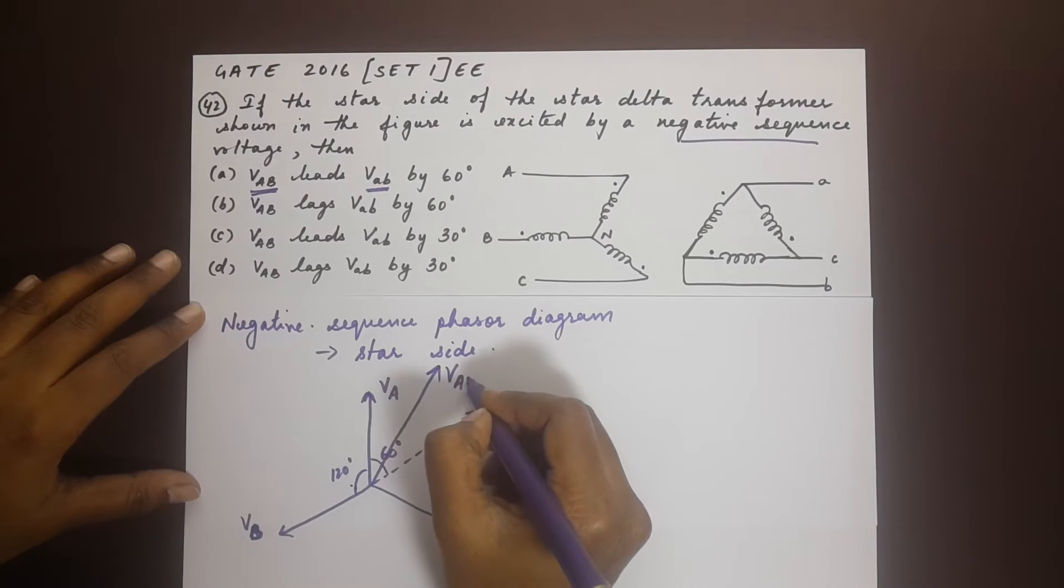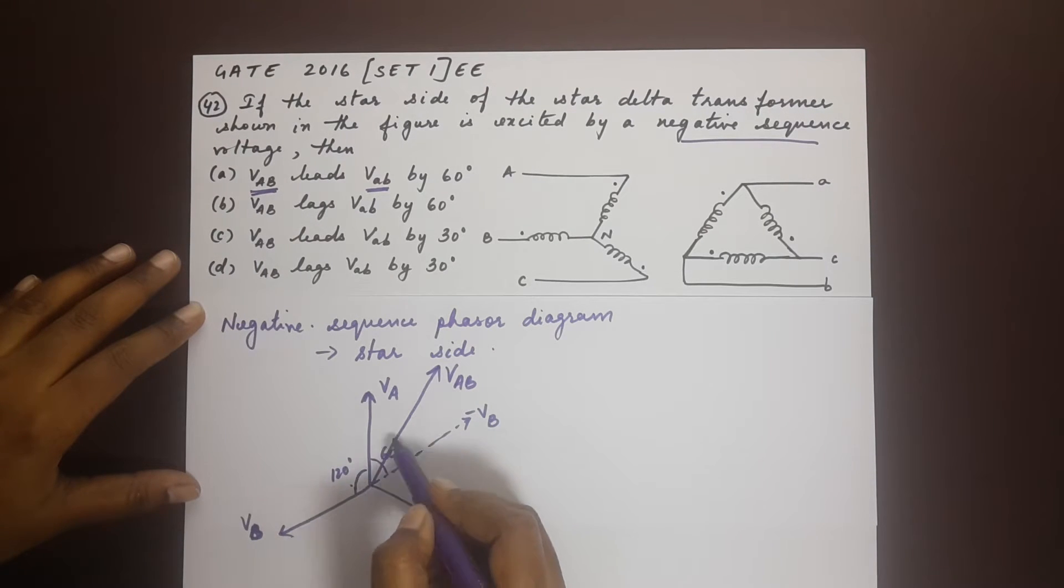Now this would be VAB, and since it goes right through the center it would be half of 60 degrees. So this is 30 degrees.